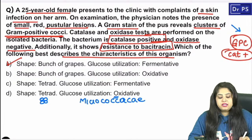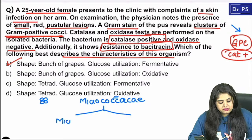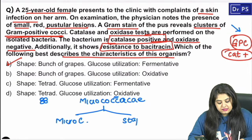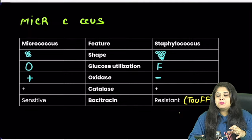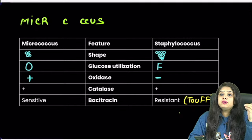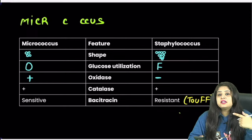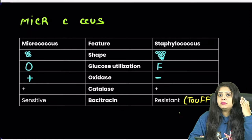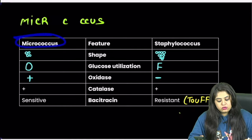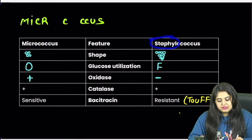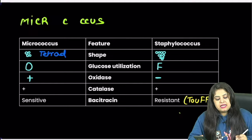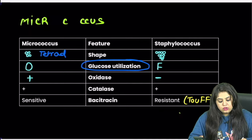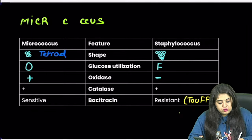Staphylococcus and Micrococcus belong to the Micrococcaceae family. To differentiate: Staphylococcus appears as a bunch of grapes, while Micrococcus appears as groups of four — a tetrad. Glucose utilization is the key differentiator: Micrococcus is oxidative, Staphylococcus is fermentative.